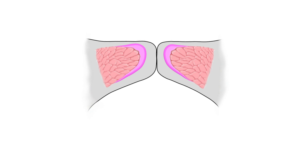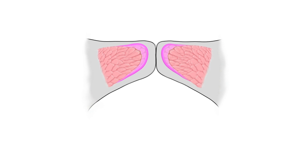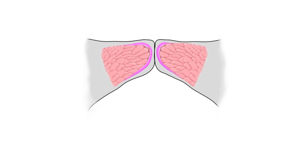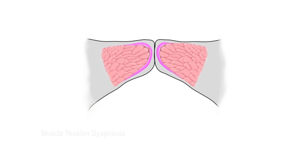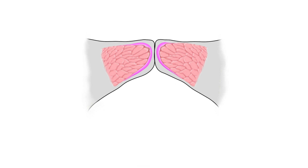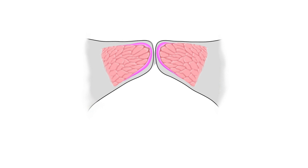Not only can a raspy voice occur due to organic pathology, but also from functional impairment such as muscle tension dysphonia. In this condition, the muscle is too tight, causing the vocal folds to be compressed more firmly into each other than normal. This vocal fold compression essentially smothers the mucosal wave, causing the vibration to be irregular and unpredictable.